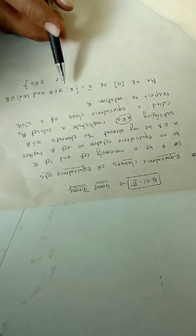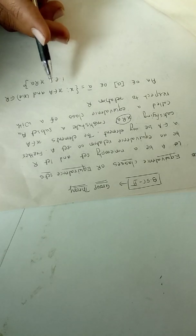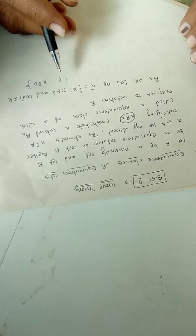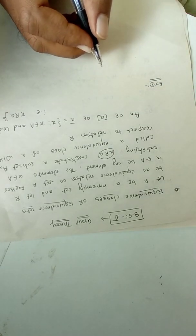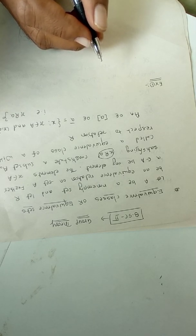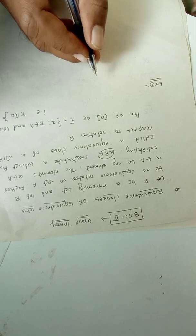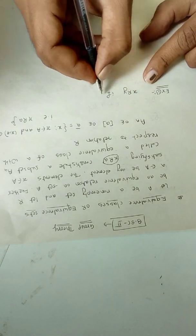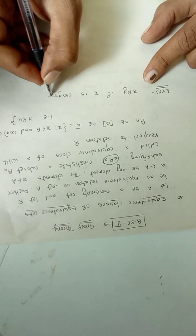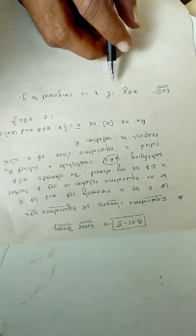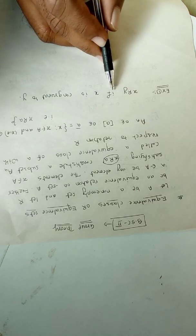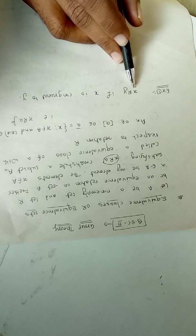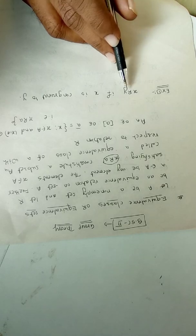The equivalence class of a contains all elements which are related to a with respect to the relation R. For example, let A be the set of all triangles in a plane and let R be an equivalence relation in A defined by x is congruent to y — that is, x is related to y if and only if x is congruent to y. This set contains all elements x belonging to A such that x is congruent to y.